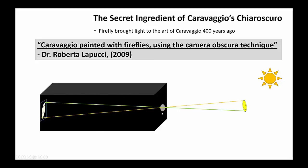He purposely drew a hole in his studio and allowed light — using the camera obscura technique — to come in and project the image of his object onto the canvas. And with that projected image, he would have the outline to paint his object.